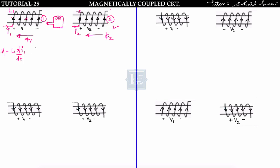The mutually induced EMF is ±M di2/dt, where M is the mutual inductance. Whether it is plus or minus depends on the direction of flux φ2. Here the direction of φ2 and φ1 are both the same, so φ2 is adding to φ1. The net flux in coil one increases, so the voltage induced in coil one increases. That means when both flux directions are the same, the mutually induced EMF is positive.